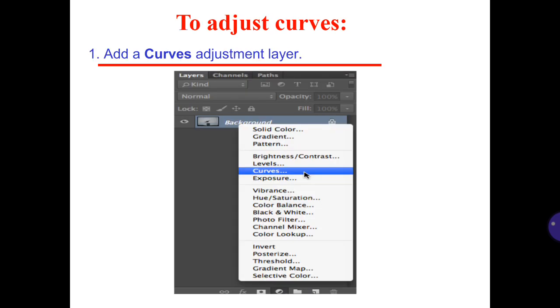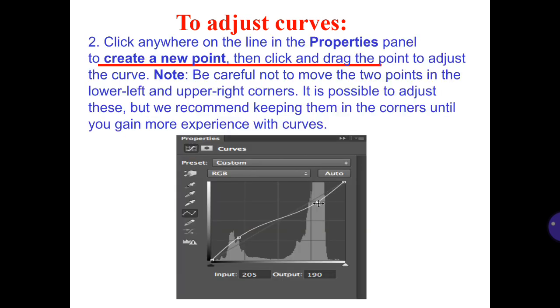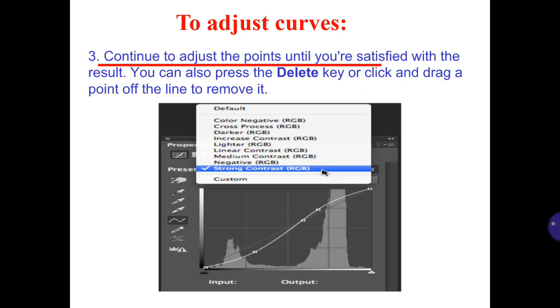To adjust curves: First, add a curves adjustment layer. Second, click anywhere on the line in the properties panel to create a new point, then click and drag the point to adjust the curve. Note: be careful not to move the two points in the lower-left and upper-right corners. It is possible to adjust these, but we recommend keeping them in the corners until you gain more experience with curves. Three, continue to adjust the points until you are satisfied with the result. You can also press the delete key or click and drag a point off the line to remove it.